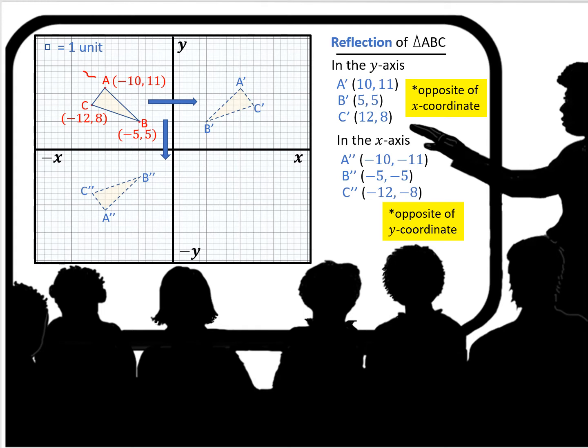Now we'll look at a reflection of ABC in the x axis. So in the x axis, you're going to take the opposite of the y coordinate. So again, if the A coordinate is negative 10, 11, then A prime prime is going to be negative 10, negative 11. And likewise with B prime prime and C prime prime.